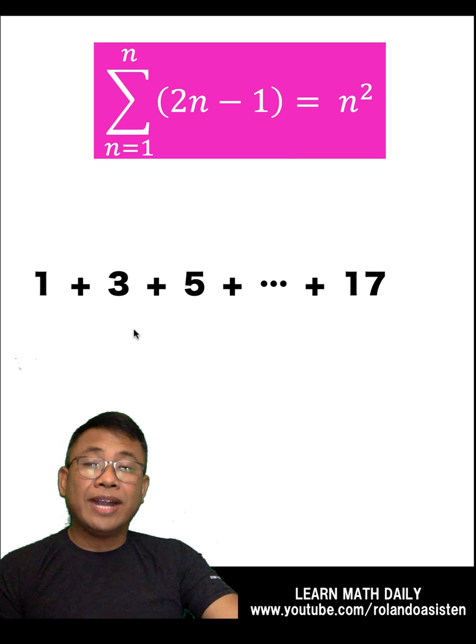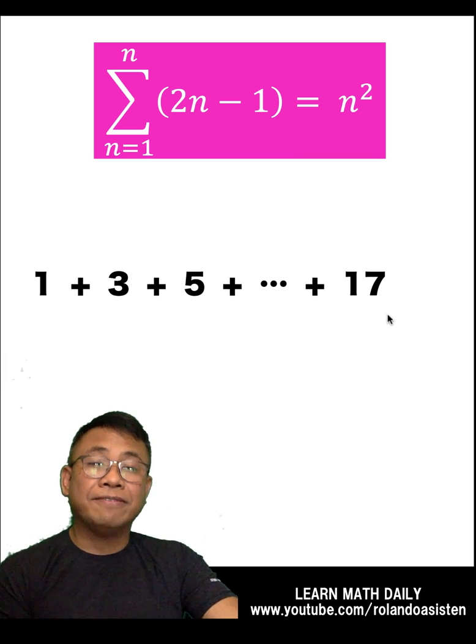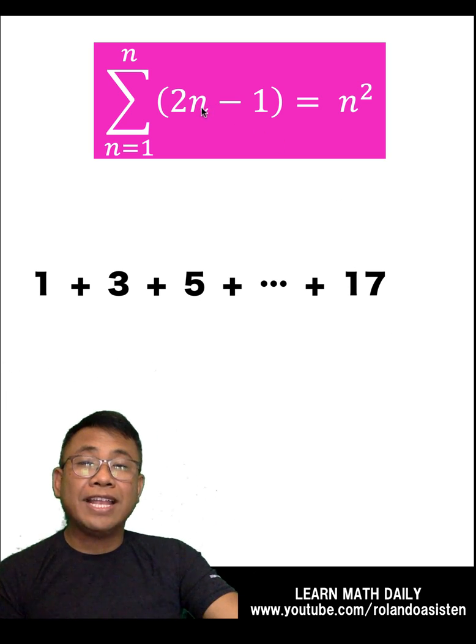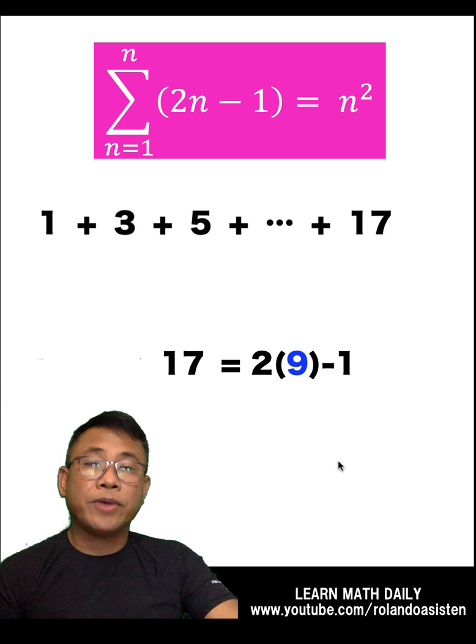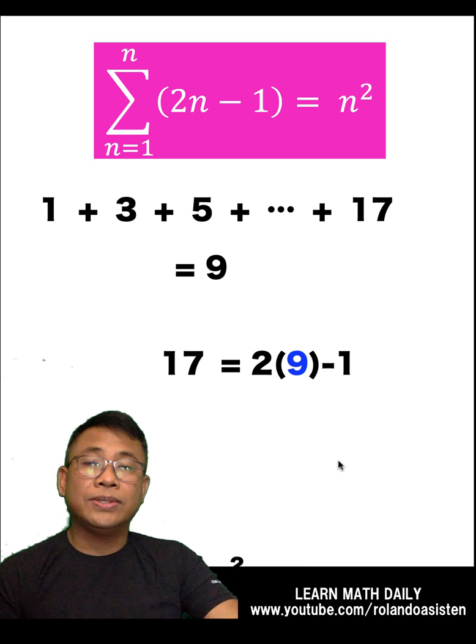As an application, let's say you are asked to find the sum of 1 plus 3 plus 5 plus until 17. Here, we do not know what's the value of n. But we can compute for the value of n by just using this form, 2 times n minus 1. And since 17 can be written as 2 times 9 minus 1, it follows that our n is equal to 9. And therefore, the sum of these consecutive odd numbers is equal to 9 squared, which is equal to 81.